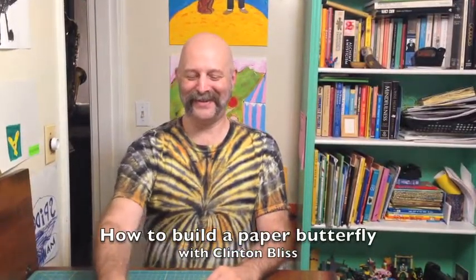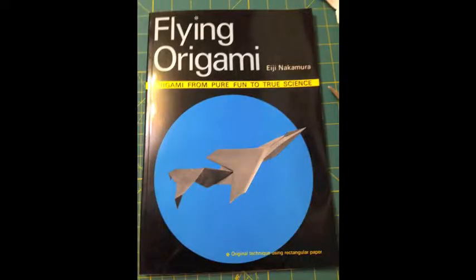Hi, this is Clinton Bliss. I'm here to show you how to make a flying paper butterfly origami. This is from the book Flying Origami by Eiji Nakamura. Here are a couple of examples. One's a little wider wing and the other a little narrower.